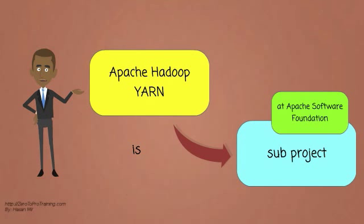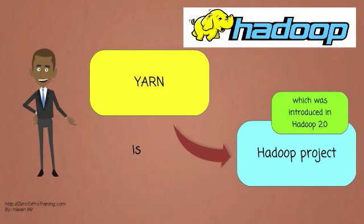Apache Hadoop YARN is a sub-project at Apache Software Foundation. YARN is a Hadoop project which was introduced in Hadoop version 2.